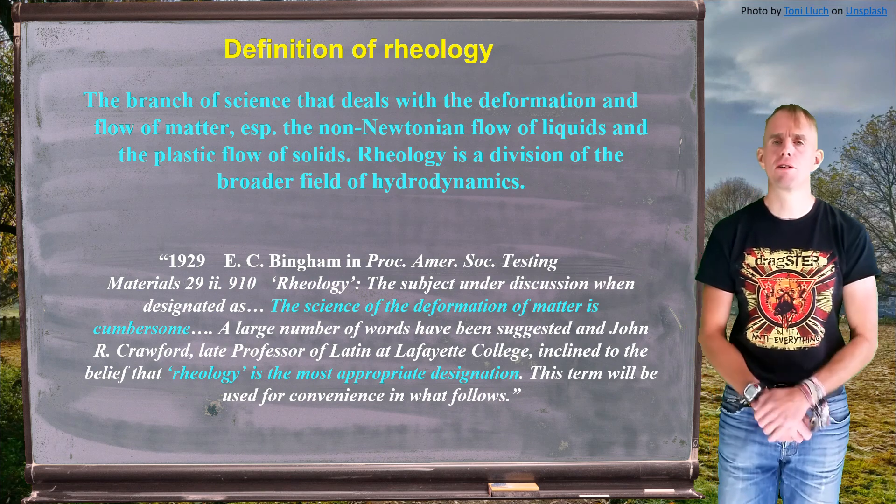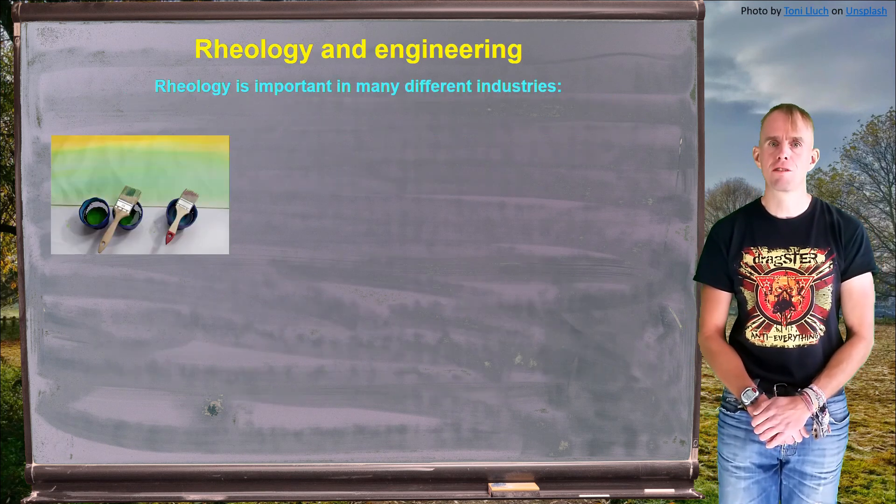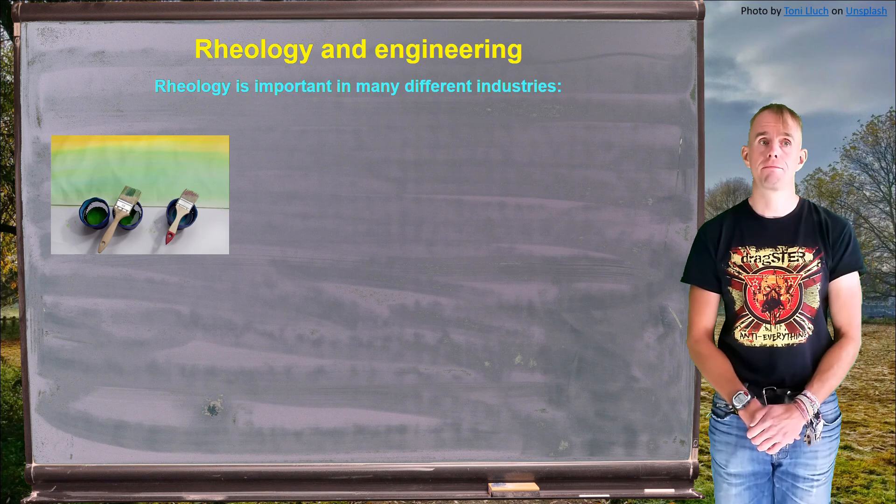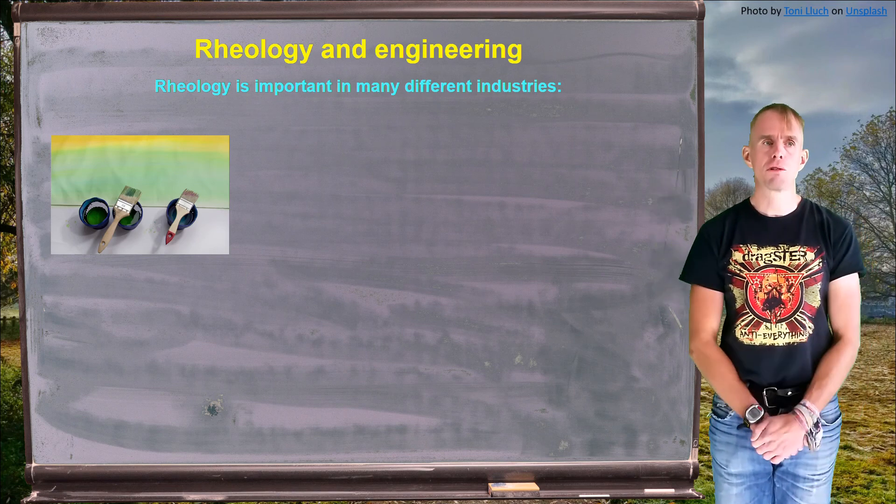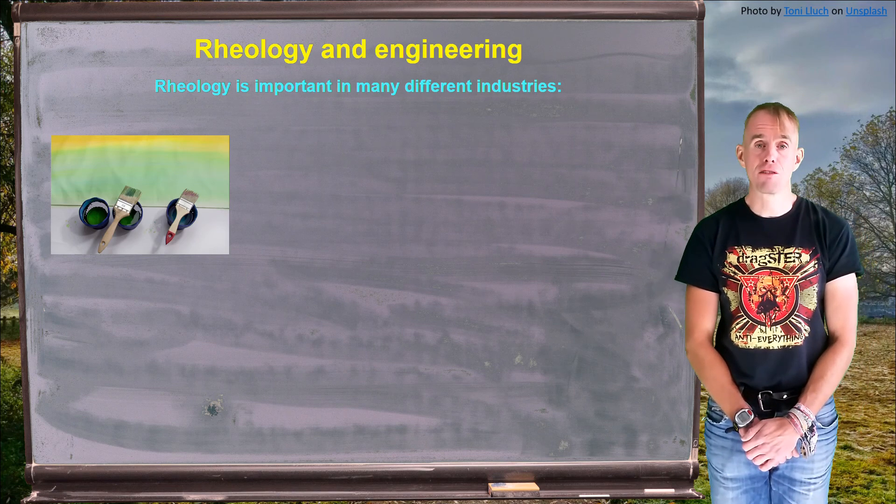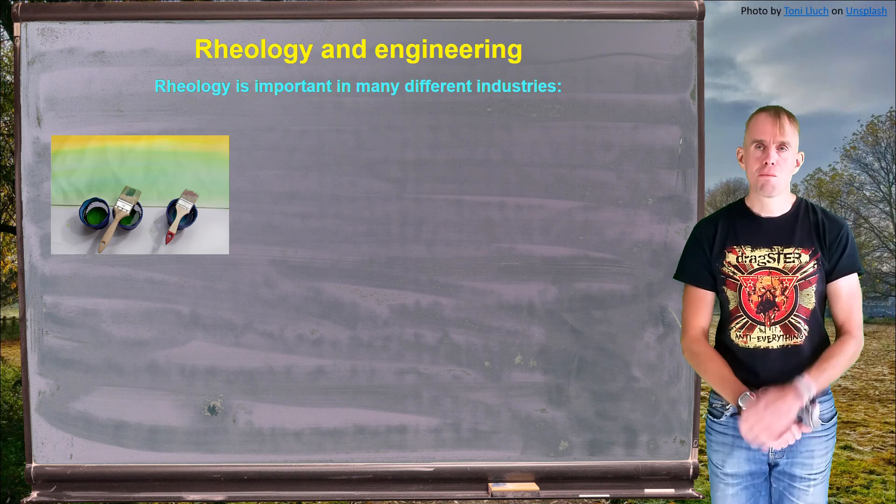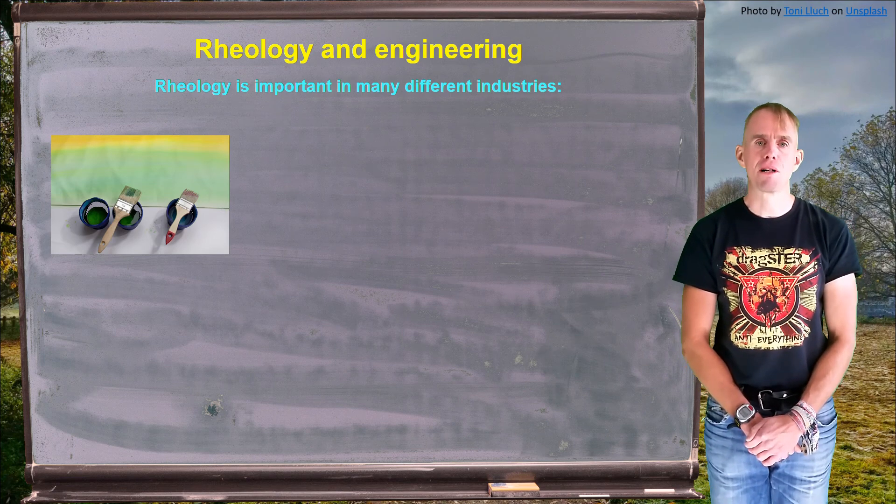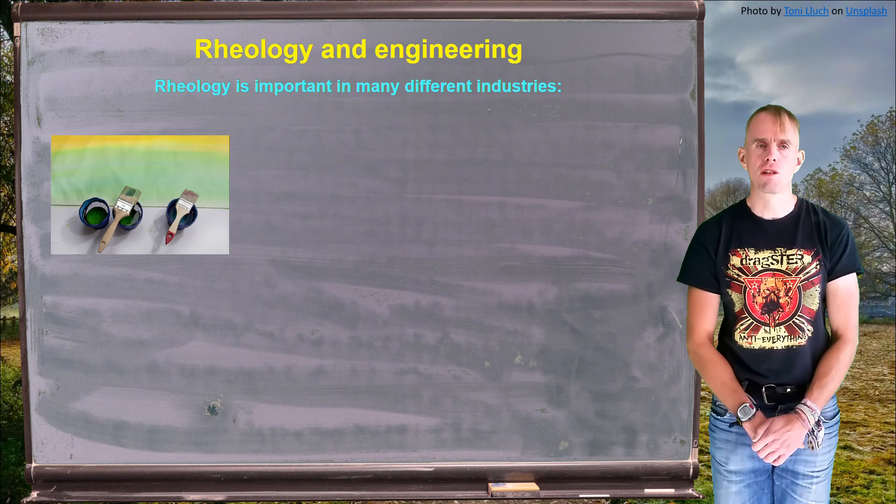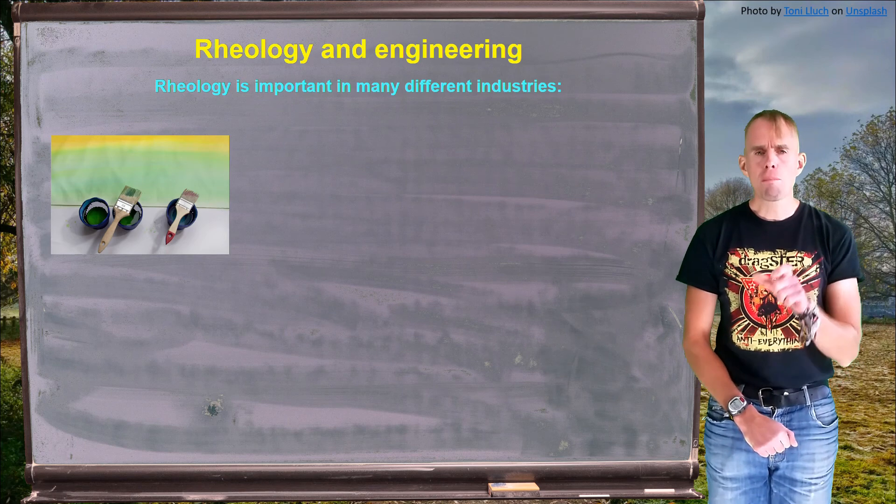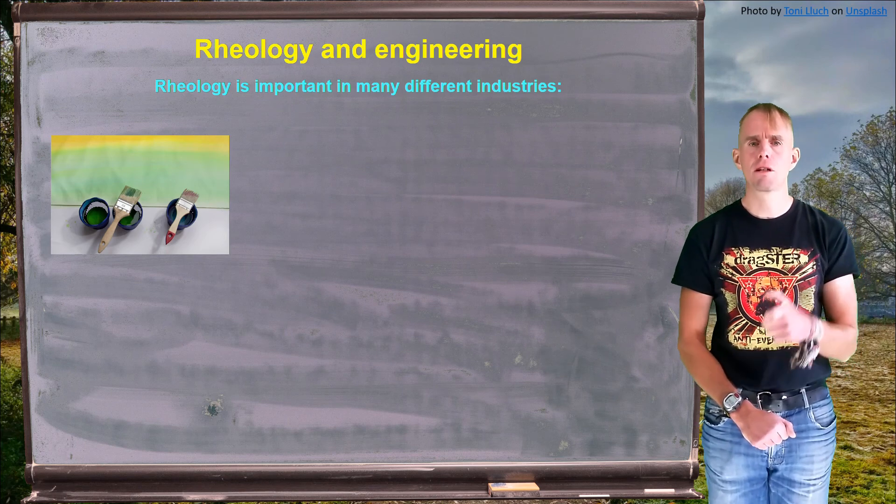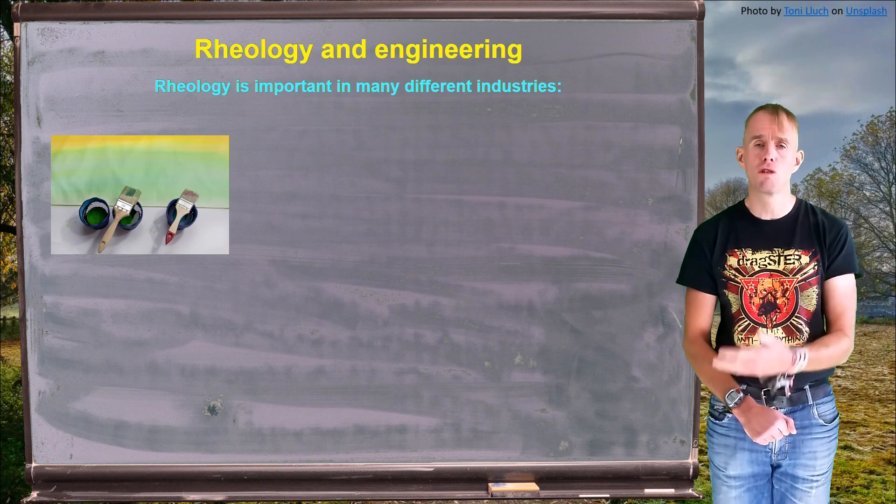Before we go any further, let's examine some rheologically interesting materials that you might be familiar with. Here on my blackboard, I have a picture of some cans of paint. Some of you may have tried painting things in the past, with varying degrees of success. But, in order for paint to be effective, it needs to display different material properties, depending on what we're doing.